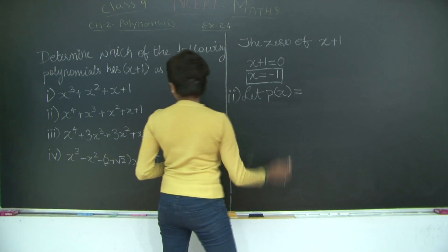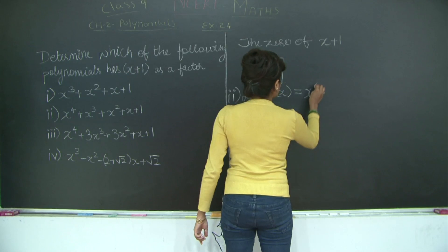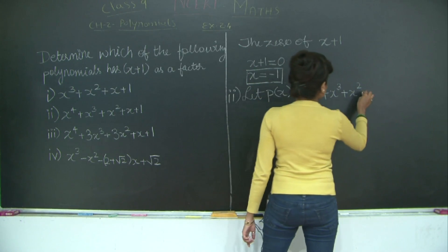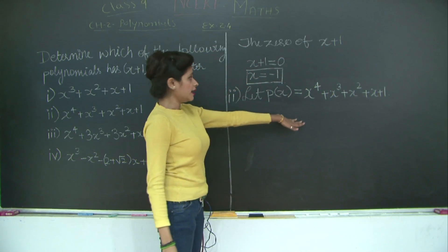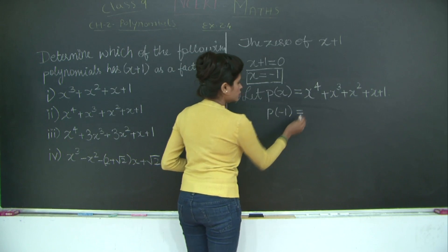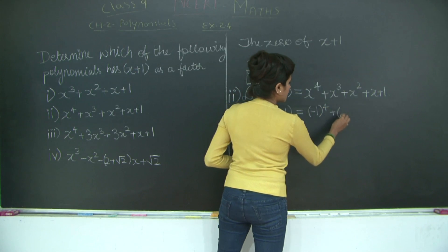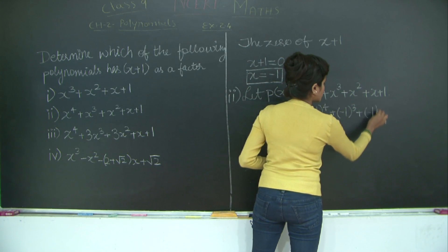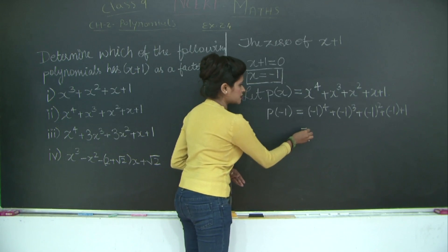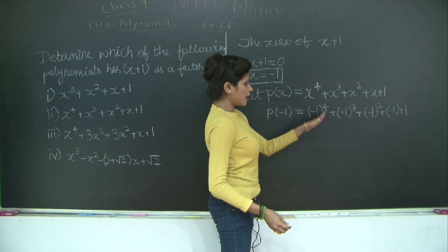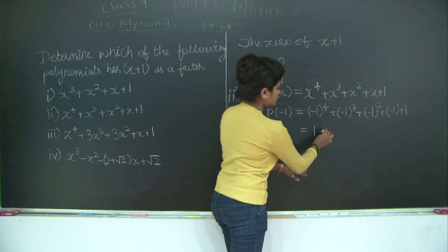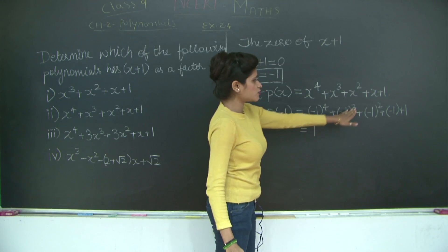For the second polynomial, let p(x) equal x to the power 4 plus x cubed plus x squared plus x plus 1. Substituting x equals minus 1, we get p of minus 1 equals minus 1 to the power 4 plus minus 1 to the power 3 plus minus 1 squared plus minus 1 plus 1. Since minus 1 raised to any even power gives a positive result, minus 1 to the 4th is 1. Minus 1 to the 3rd is minus 1 because it is an odd power.